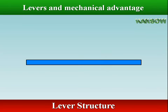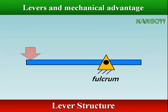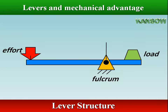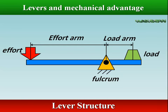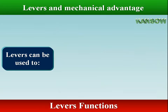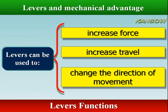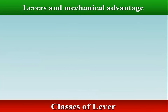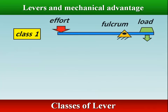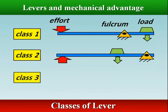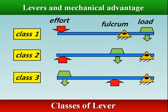A lever is a rigid bar pivoted around a fulcrum, used to transfer a force to a load. Levers can be used to increase force, increase travel, or change the direction of movement. There are three types or classes of levers, according to where the load and effort are located with respect to the fulcrum.